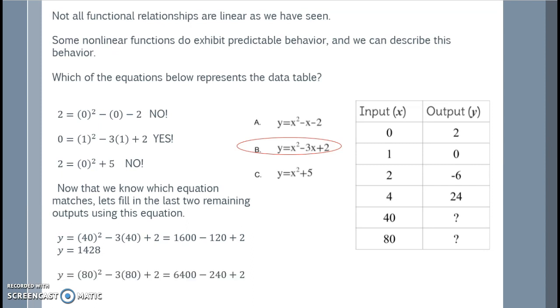We'll do the same for our input of 80. 80 squared minus 3 times 80 plus 2 is 6400 minus 240 plus 2 for 6162.